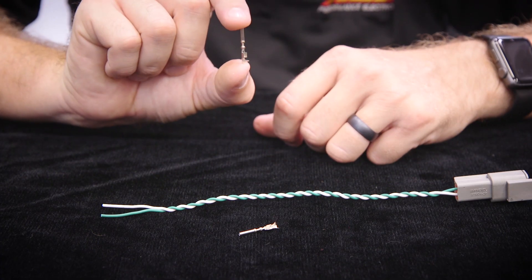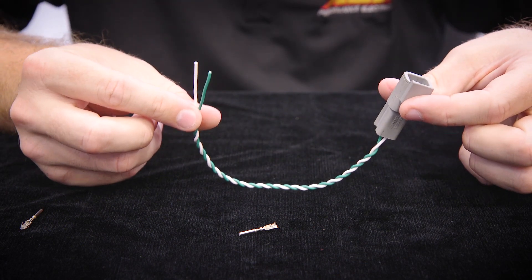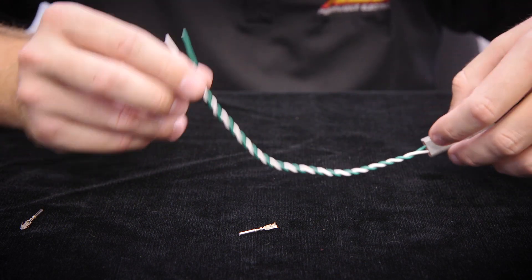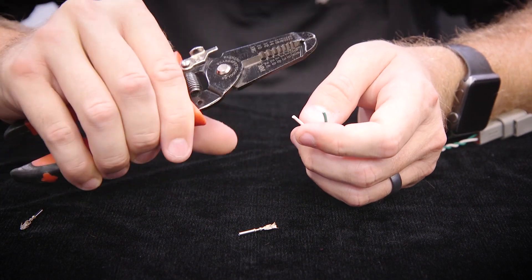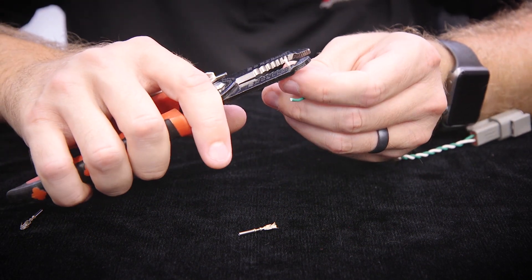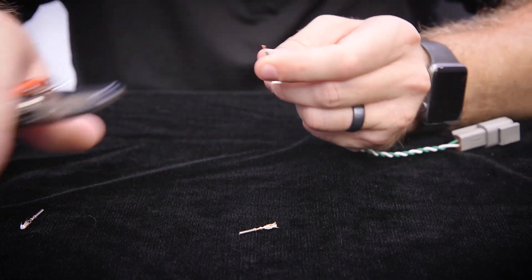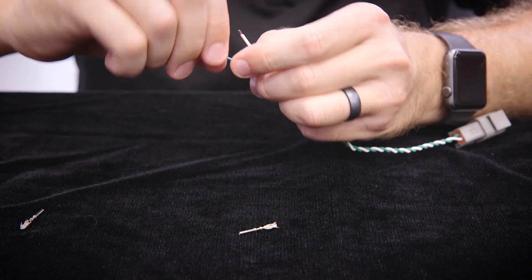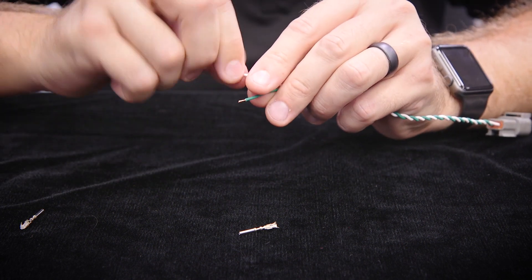So now we're going to show you how to crimp this terminal onto this CAN2 CD7 dash sub harness. First thing we're going to do is we're going to strip these wires using our handy dandy wire strippers. Twist these wires up and make sure that they're nice and tidy.